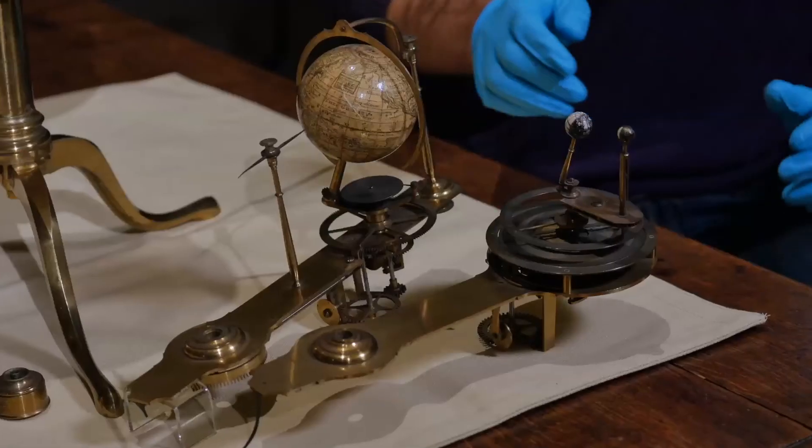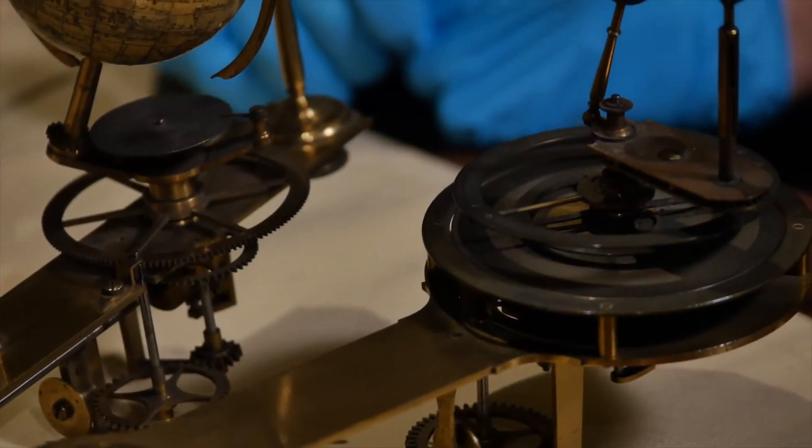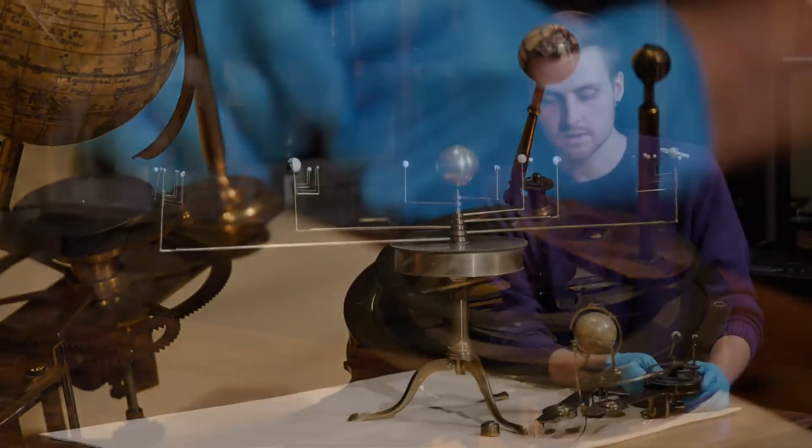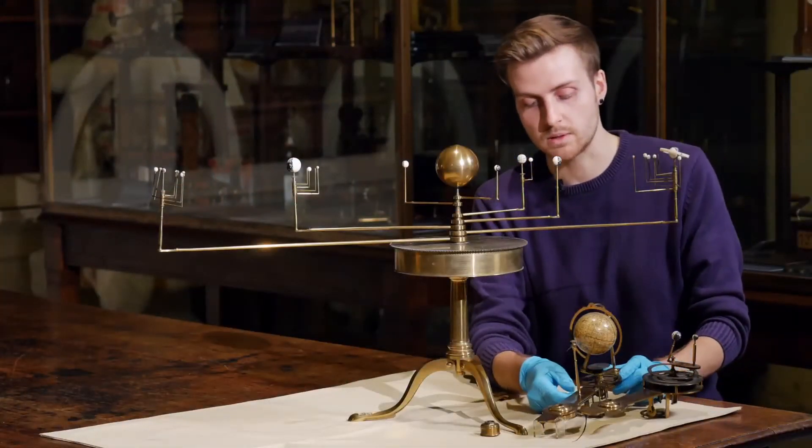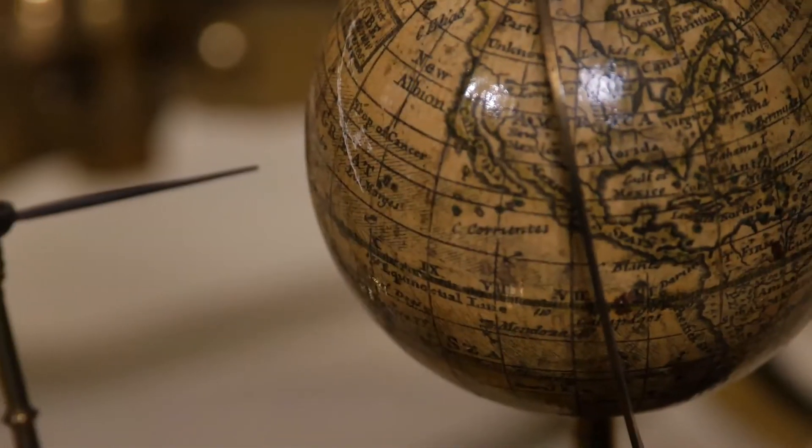This particular orrery comes with other attachments which can be used to illustrate the movement of the Moon and the Earth and to demonstrate different kinds of eclipse, and a second attachment which can be used to illustrate the revolution and rotation of the Earth and to demonstrate the changes in the seasons.